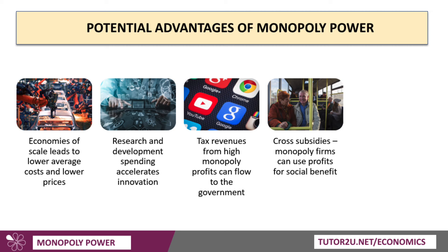A fourth argument: monopoly firms don't always have to charge one price. They may engage in cross-subsidies — using the profits from one part of a business to lower prices for socially beneficial uses in other markets. For example, cross-subsidies in terms of cheaper bus fares for older people, medical companies charging a lower price for vaccines in low-income countries, and social tariffs offering a lower charge for people on low incomes or unemployed people during the cost of living crisis.